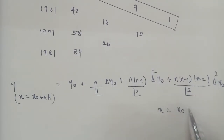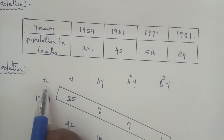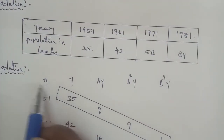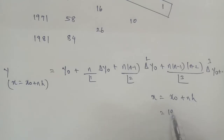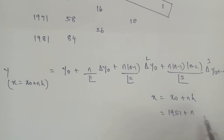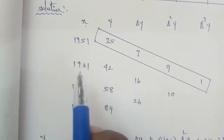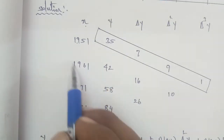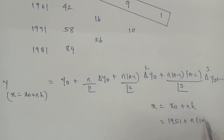Now we find n using x = x₀ + nh. Here x = 1955, x₀ = 1951, and h = 10 (since the census is taken every 10 years, the difference between 1951, 1961, 1971 is 10). So 1955 - 1951 = 10n, giving 4 = 10n, therefore n = 0.4.